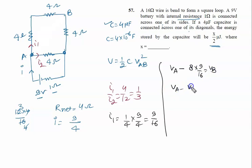So Va minus Vb is given by 8 to the 16, 9 by 2. So put in this formula. Energy is given by half.